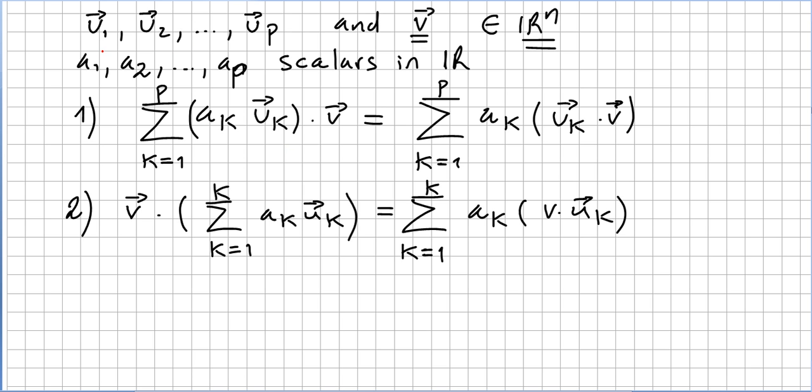So here we are, we have vectors u1, u2, up, and a fixed vector v. That's the one that we have to prove that the dot product with this fixed vector represents a linear operation. They are all in this vector space R^m. And we take a1, a2, ap, scalars in R.